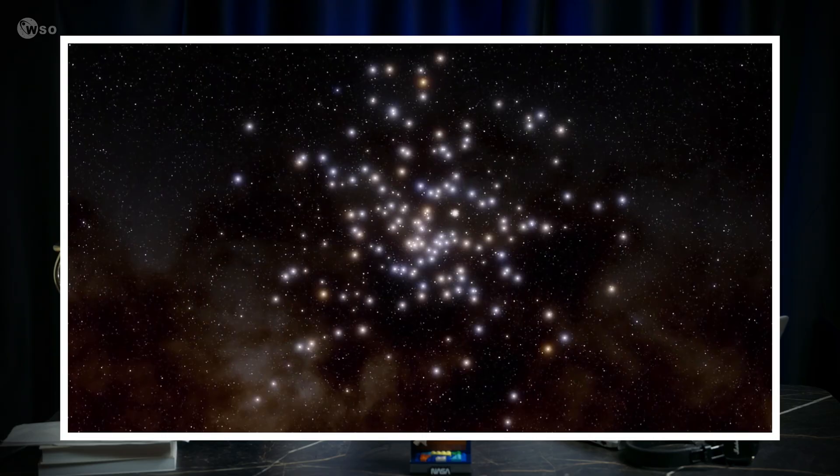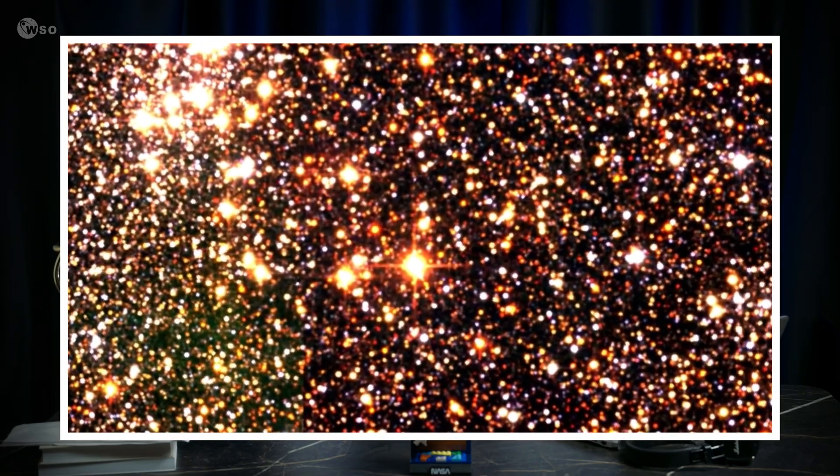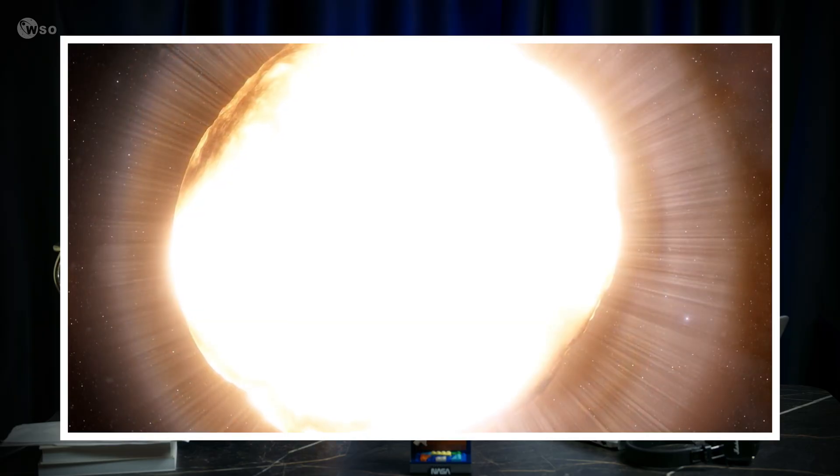Stephenson 2-18 was originally assumed to be a member of the Stephenson 2 cluster, about 20,000 light-years away. If that distance were correct, its brightness implies the enormous, over 2,100 solar radius figure. Unbelievable.